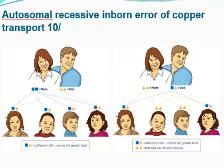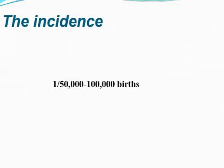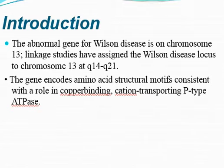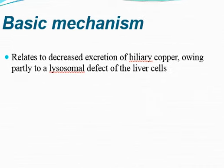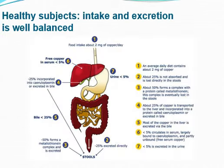The incidence is 1 in 50,000 to 1 lakh births. The abnormal gene for Wilson's disease is present on chromosome 13. In the brain, the gene encodes amino acids structurally consistent with a role in copper binding and transporting P-type ATPase. It is basically related to decreased excretion of biliary copper, which gets deposited in different parts of the brain, due to a lysosomal defect in the liver cells.